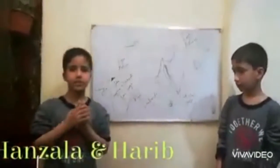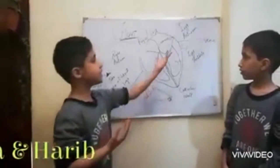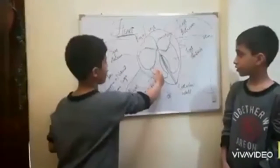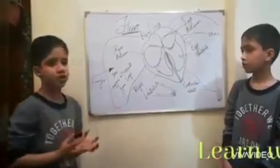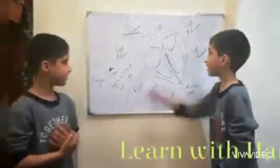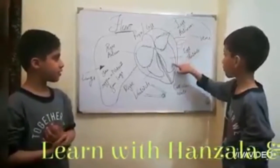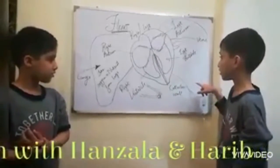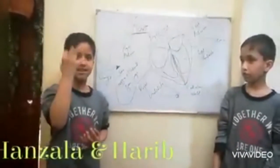Now I will tell you how the heart works. The veins take the deoxygenated blood to the right atrium, then to the right ventricle, and then to the lungs to take oxygen and nutrients. Then it goes to the left atrium, then to the left ventricle, and through the arteries it goes into the body. Our heart pumps like this.